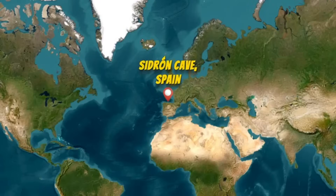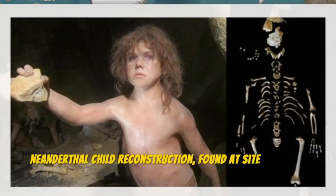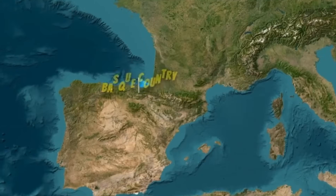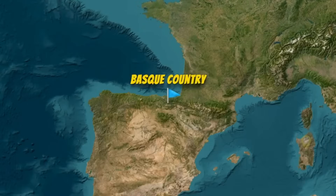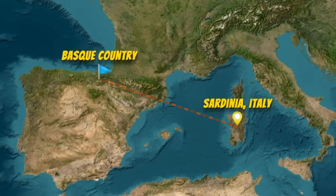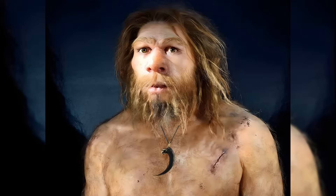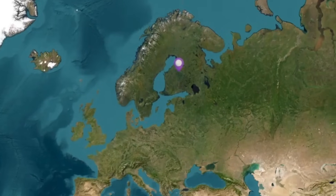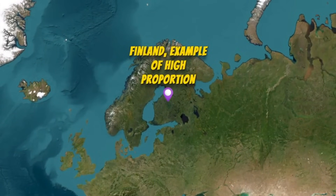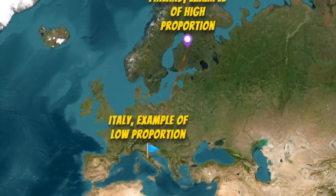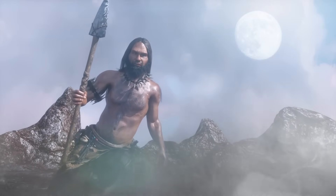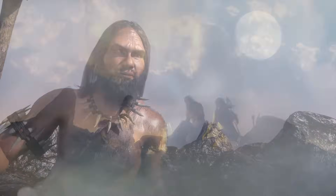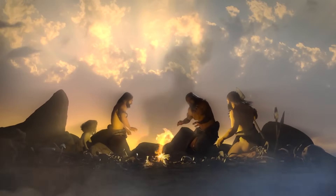Modern Europeans possess Neanderthal DNA comprising approximately 1.8% to 2.6% of their genomes, reflecting ancient interbreeding events. This Neanderthal genetic contribution is not distributed uniformly across modern European populations, creating a pattern that helps illuminate both ancient migration patterns and the influence of ghost populations in European prehistory. Current genomic research reveals a consistent north-south gradient in Neanderthal ancestry across Europe, with Northern Europeans typically carrying higher proportions — averaging 2.3% to 2.6% — compared to Southern Europeans, averaging 1.8% to 2.1%. This pattern was initially puzzling because Neanderthals inhabited Southern Europe for longer periods.